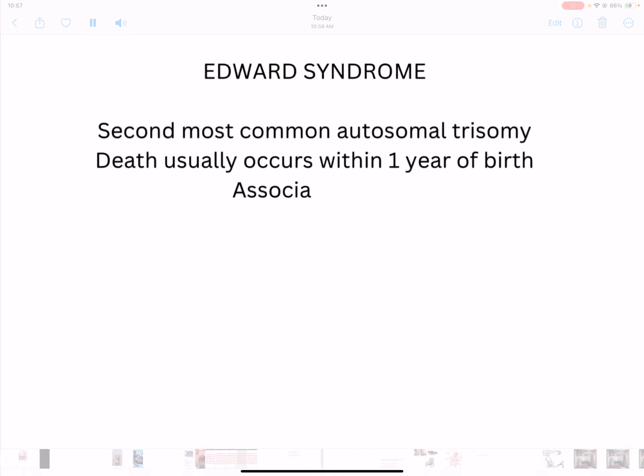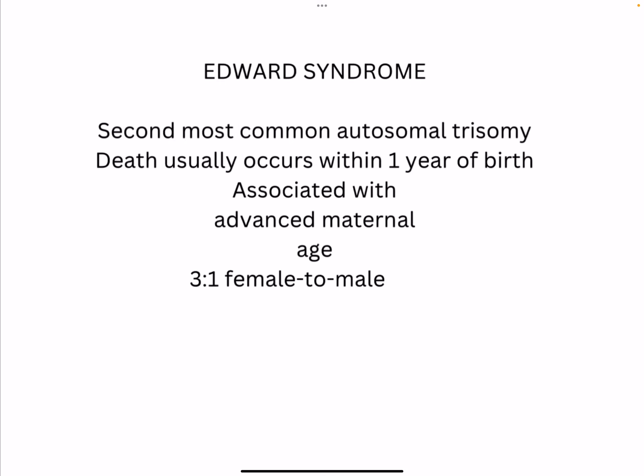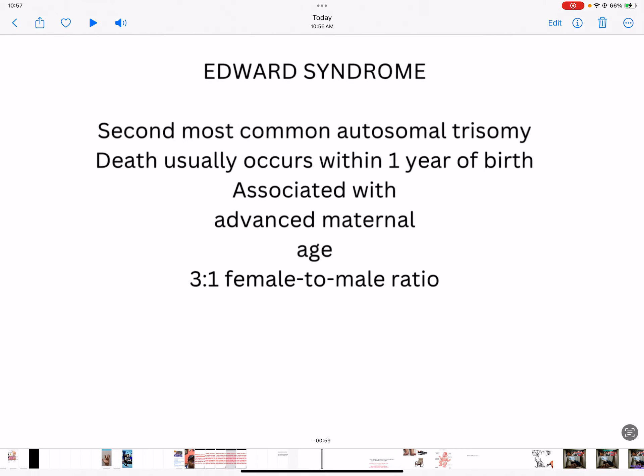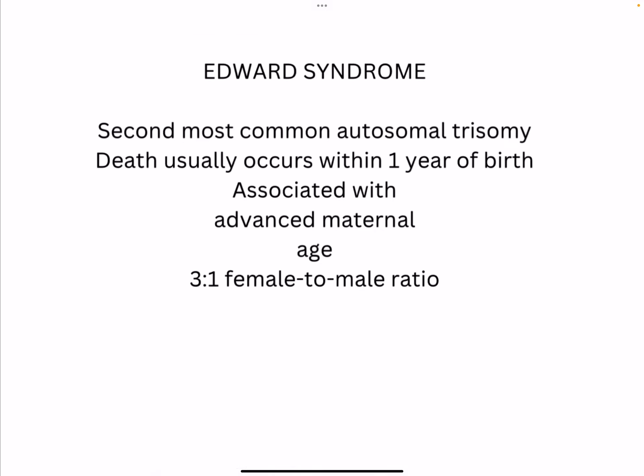Edward Syndrome is the second most common autosomal trisomy. The most common autosomal trisomy is Down Syndrome, which involves chromosome number 21. After that, we have Edward Syndrome. Remember that in Edward Syndrome, death usually occurs within one year of birth.